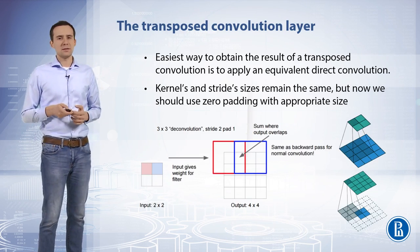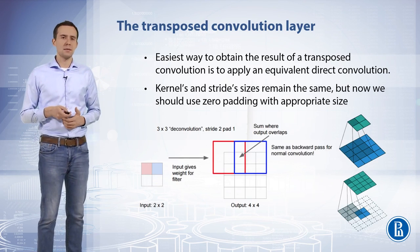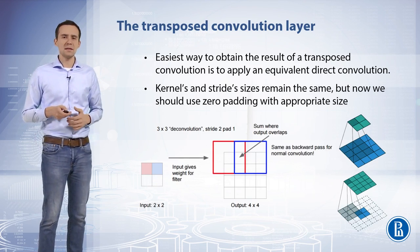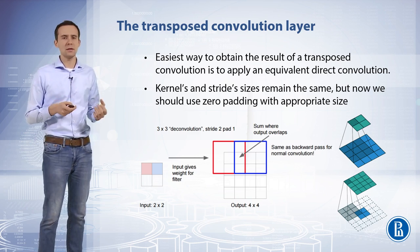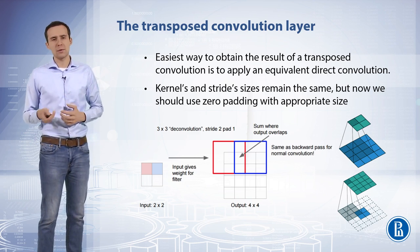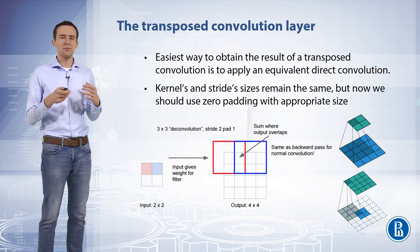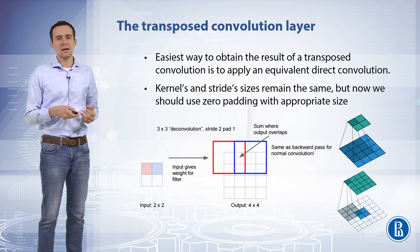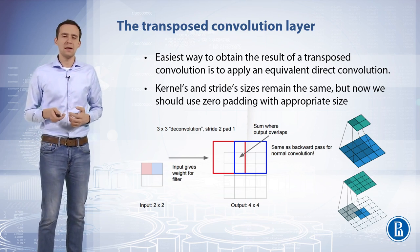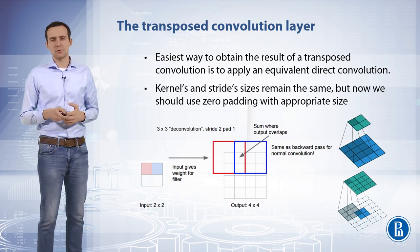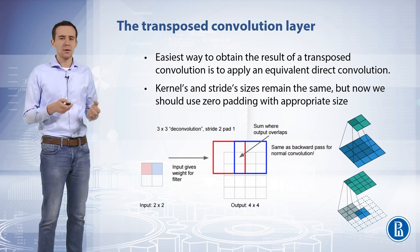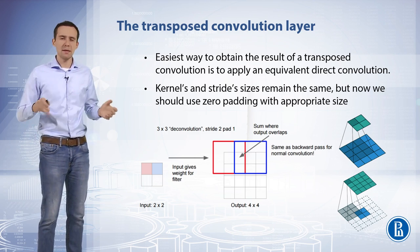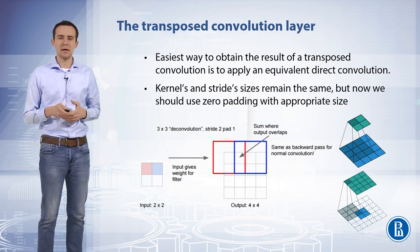Let's look at the details of transposed convolution employed in the SegNet model. Basically, the idea is to scale up the scaled-down effect made on all previous layers. The upsampling or transposed convolution forward propagation is equivalent to convolution backpropagation, and the upsampling backpropagation is the convolution forward propagation. The easiest way to obtain the result of a transposed convolution is to apply an equivalent direct convolution — kernel and stride sizes remain the same, but now we use zero padding with appropriate size.